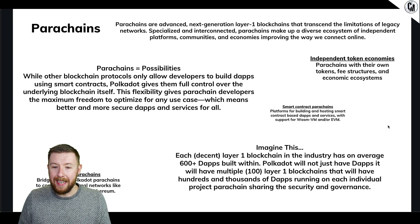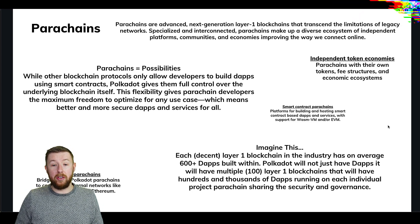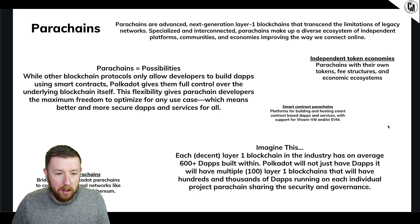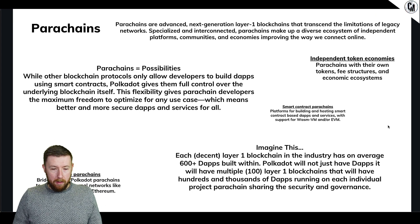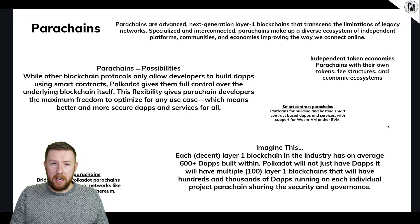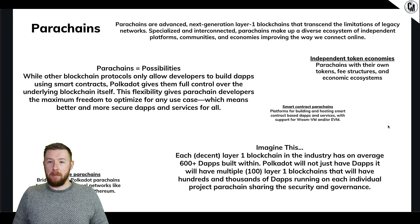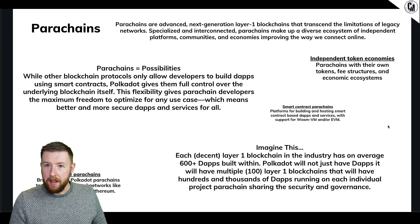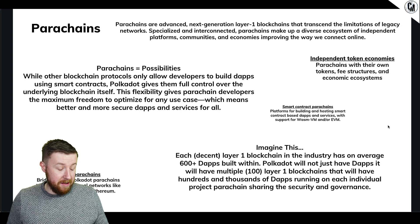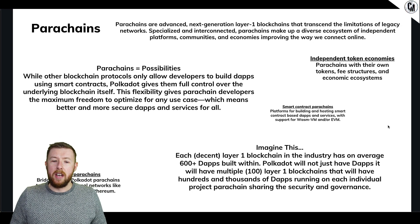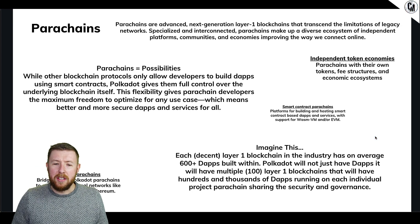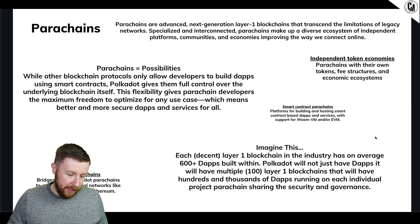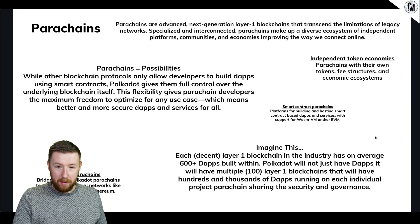While other blockchain protocols only allow developers to build dApps using smart contracts, Polkadot gives full control of the underlying blockchain itself. In simple terms: if you want to build on Ethereum, you can only use Ethereum. Look at the likes of Utrust or Chainlink - they are on the Ethereum blockchain and can only utilize the protocols on there. With Polkadot, you can share the security and governance elements but make your blockchain whatever you want.